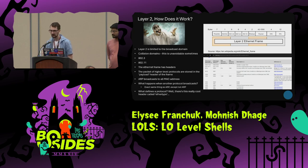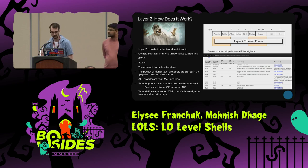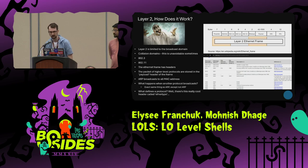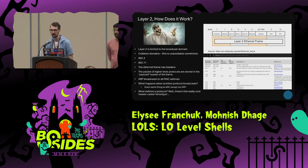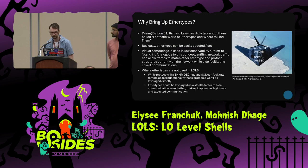ARP broadcasts to all nodes on the network using the FFF address. But other protocols can do the exact same thing — there's no difference. The Ether type is what defines a protocol, and in IANA you can register your own Ether type, which we'll get into in the next section.